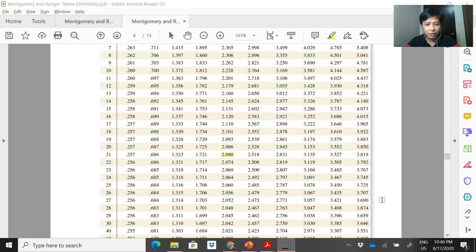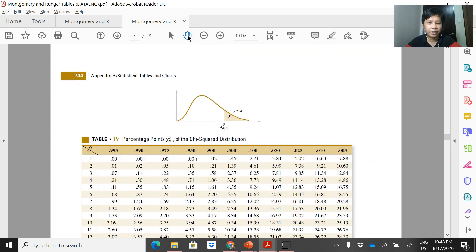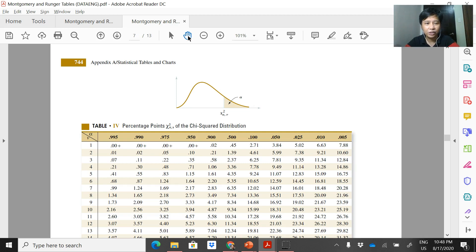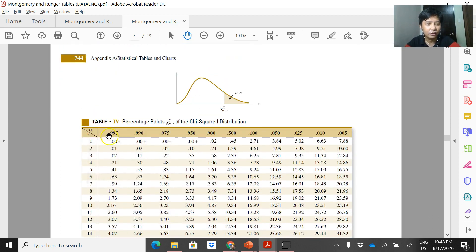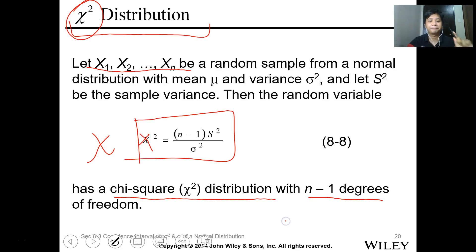This is the chi-square again. Let's go to our table again. Here in our table, the table I gave you, we'll use the chi-square table. This is the chi-square table. Take note, the alpha is here. And this is the alpha value. See 0.995, etc. This is the alpha. And this is the degrees of freedom, the n minus 1. This is the chi-square value.